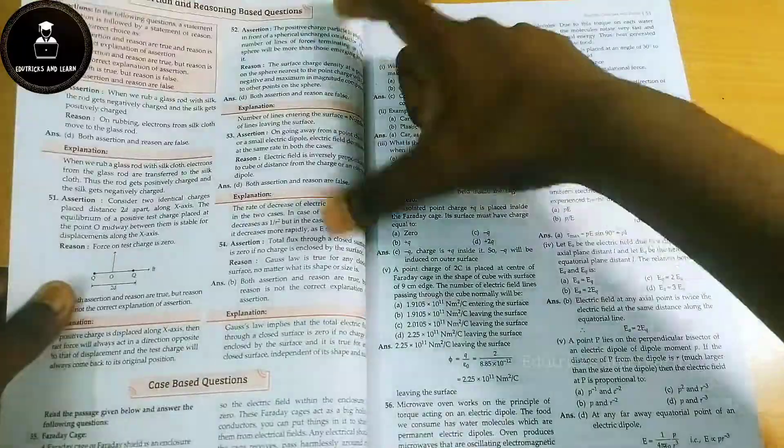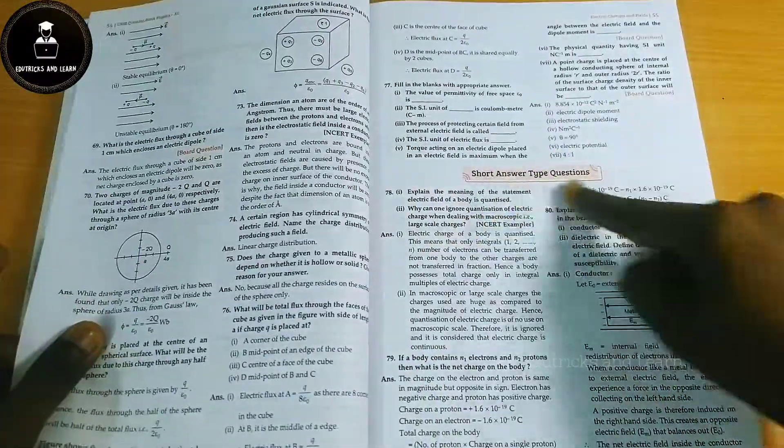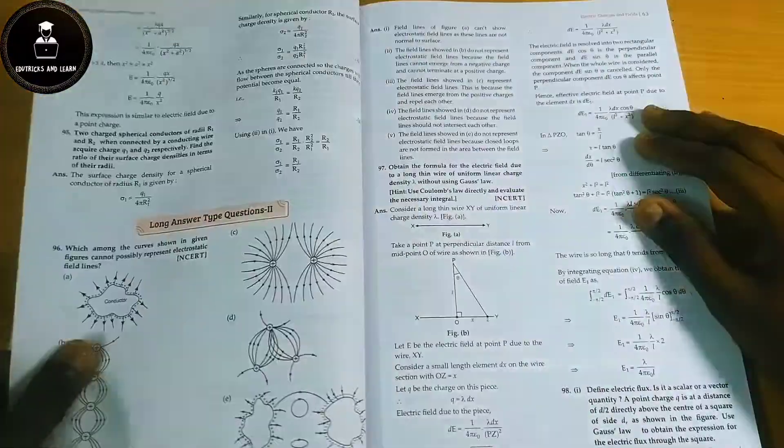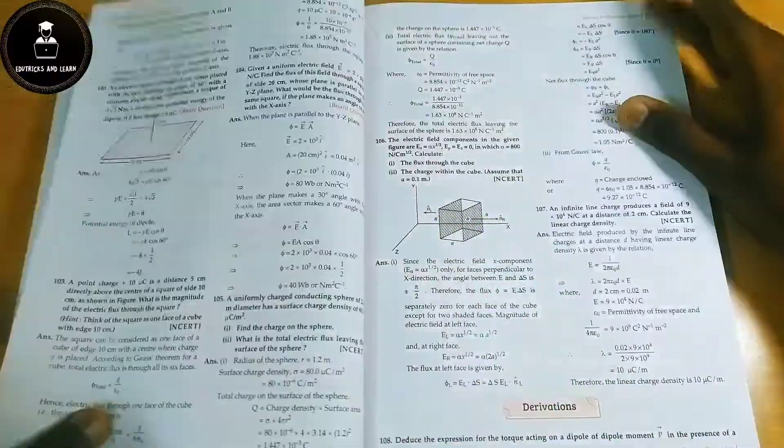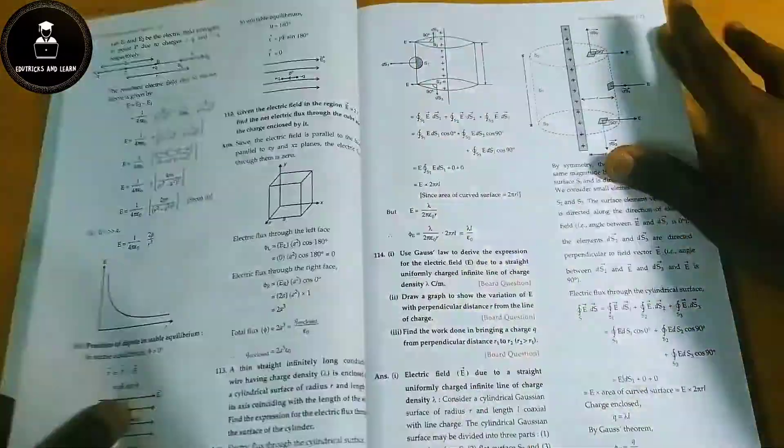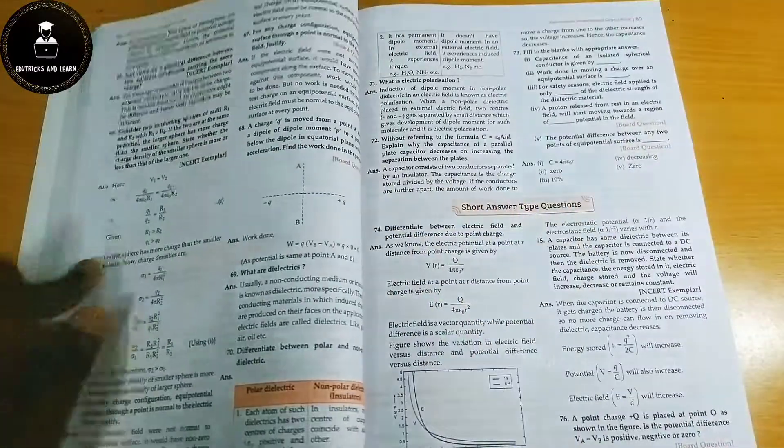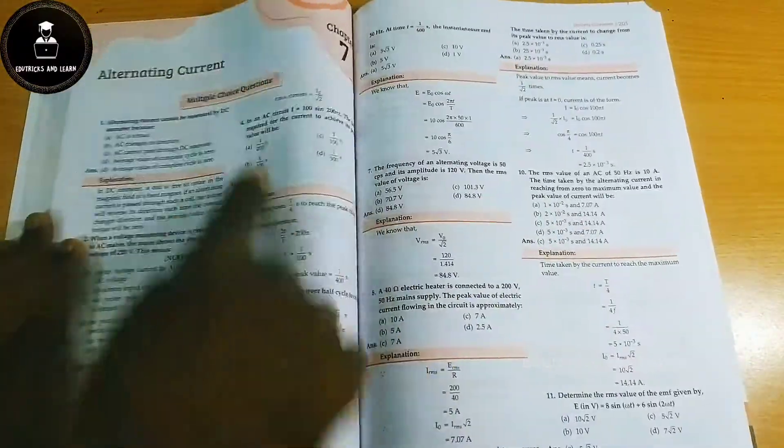They've given multiple questions for a chapter initially: multiple choice questions, assertion and reasoning based questions, case based questions, very short answer type 1 and type 2 questions, short answer type 1 questions, long answer type 1 and long answer type 2 questions. After that they've given numerical based questions, derivation based questions, and evaluation and analysis based questions. These are the contents they are following for all upcoming chapters.